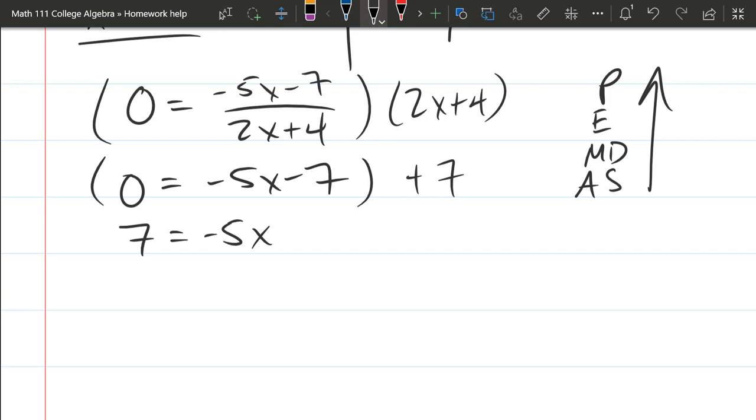Now we have to get x's last friend out of here. How do you get this negative times five? You multiply by negative one-fifth, or divide by negative five. So you have seven divided by five, and it's negative.